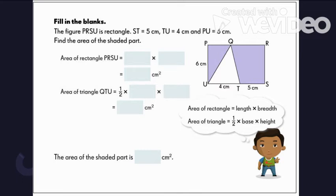We learned that to get the area of the rectangle, we just simply multiply length times width. So let us find out the length of the rectangle. Here we can use these clues: 5 cm plus 4 cm, so the total length of the rectangle is equal to 9 cm. And looking at the height, it is equal to 6 cm. So multiplying the two, 9 times 6 will give us 54 square centimeters.